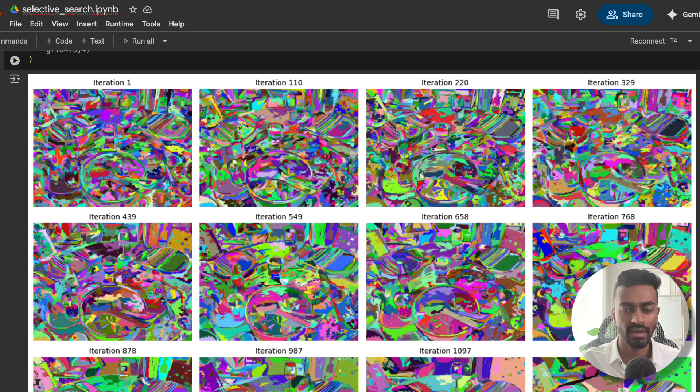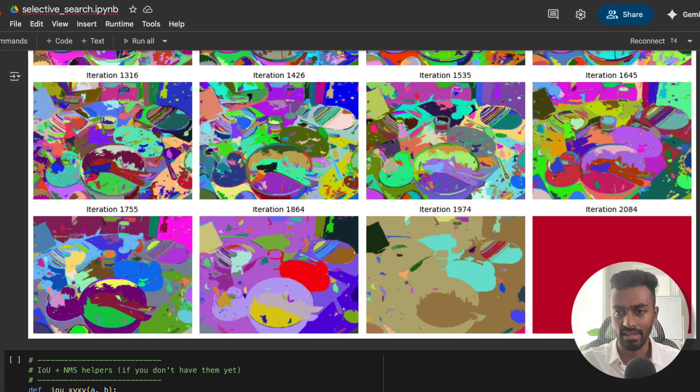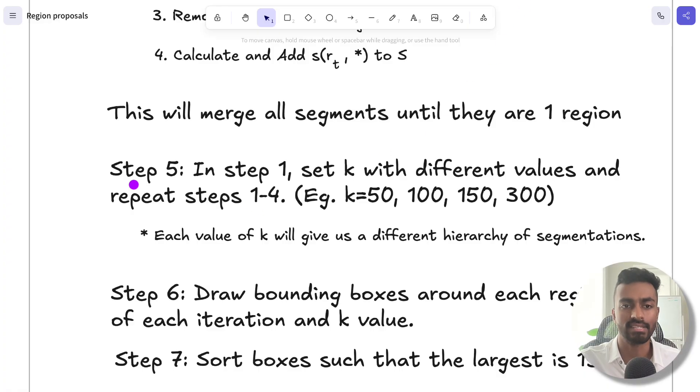And then we also do it for K equal to 300, where we start like this, and then continuously merge until we have a single segment that looks like this. So now we have four hierarchies all together. And this is exactly what is in step five, where we repeated it for K equal to 50, 100, 150, and 300.